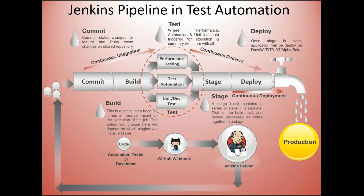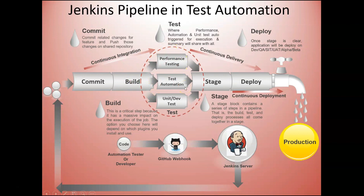As you can see on screen, there is an automation tester or developer who commits code via GitHub to the shared repository. With the Jenkins server, you can communicate from GitHub, pull repository data, and then commit, build, and test — which is the most important stage — and then stage and deploy. Good software testing practices and continuous integration now share a link, and when building, testing, and releasing software is a collaborative process, results improve across the board. One of the most popular ways to implement this is by using Jenkins.